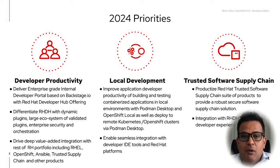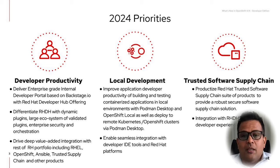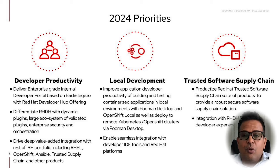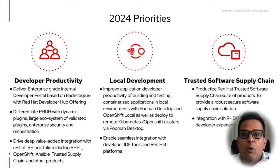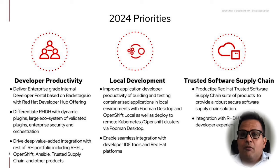Last but not least, I want to briefly touch upon what we announced at Summit 2023: Red Hat's focus on providing developers with tools to build trusted software. Software supply chain attacks are very impactful if such incidents happen in your environments. Red Hat is focused on providing a set of tools to help you secure your software supply chain, and one area we'll focus on is integrating with Red Hat Developer Hub for a better developer experience — from building secure software to delivering and collaborating across your organization.